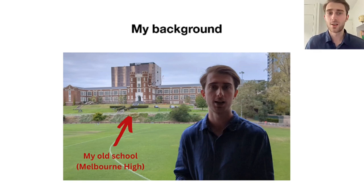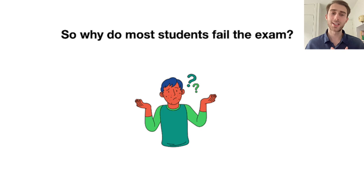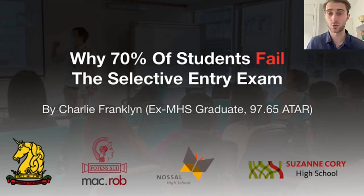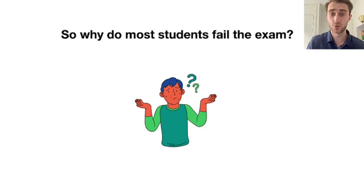So the question really is why do most students fail this exam? The logical thing is every single year there's about three to four thousand students that sit to gain entrance into one of these four schools, but from these three to four thousand students there's only around a thousand places across these four schools. This means because there's so much demand for these schools - number one they have very high median ATARs, they're often in the top five schools in the state, their median ATARs are typically around 95.